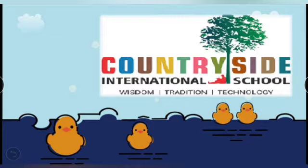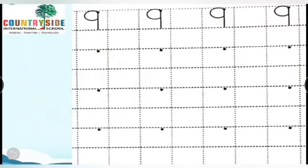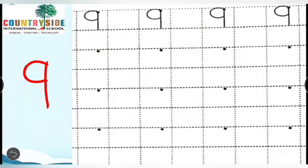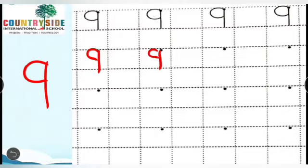Now we are going to write number 9. So what you all will do — first make a standing line and half curve. Number 9. Standing line and half curve, number 9. Do it properly.